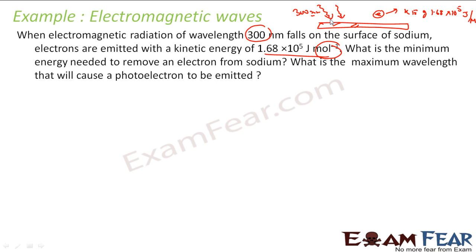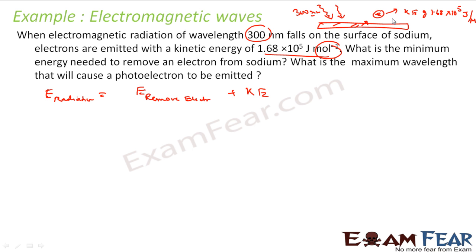What this means is: the energy from the radiation was used to remove the electron plus give it kinetic energy. So we can say: energy from radiation = energy to remove electron + kinetic energy that the electron has got.